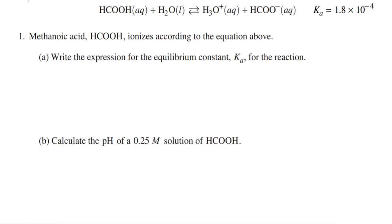It starts with question number one, and this is an acid-base equilibrium question. You can see that by a weak acid with a Ka of 1.8 times 10 to the negative fourth. This is methanoic acid. The first thing they ask us to do is write a Ka expression, so let's get to that Ka expression.